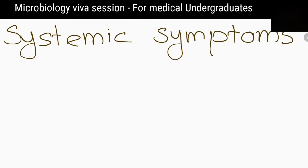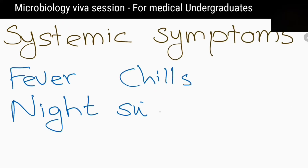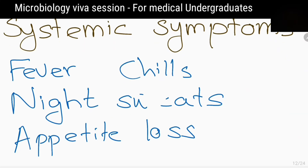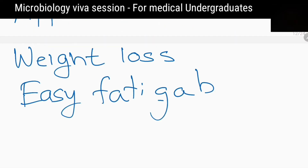What are the systemic symptoms of tuberculosis? Fever, chills, night sweats, appetite loss, weight loss, and easy fatigability.